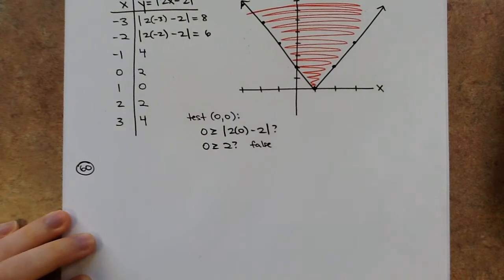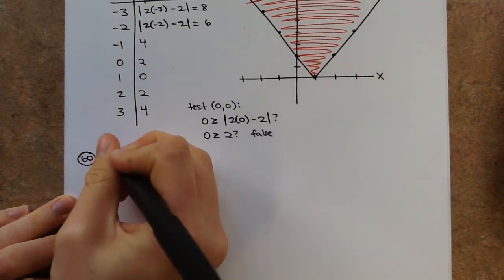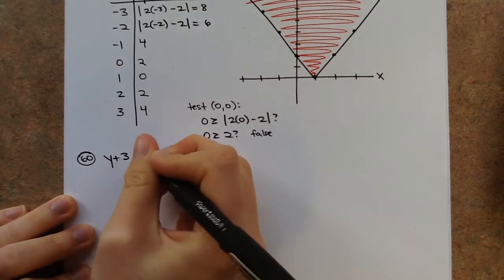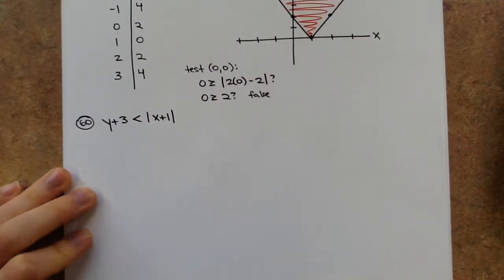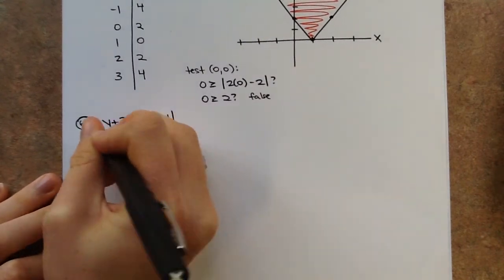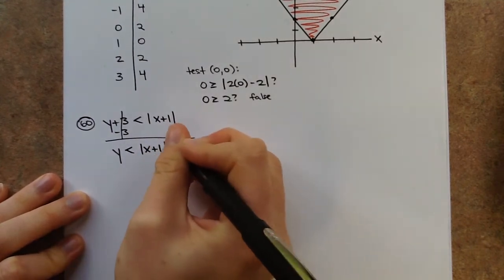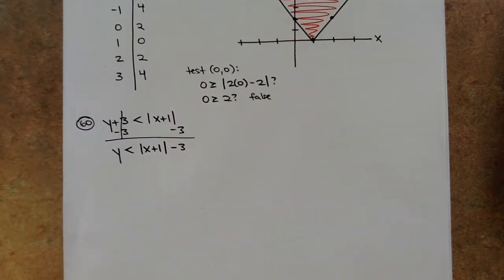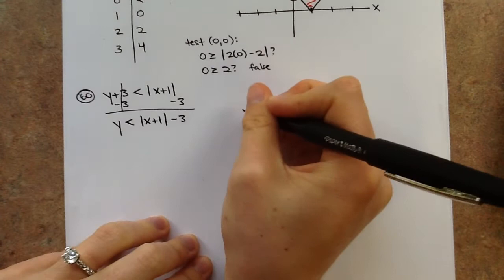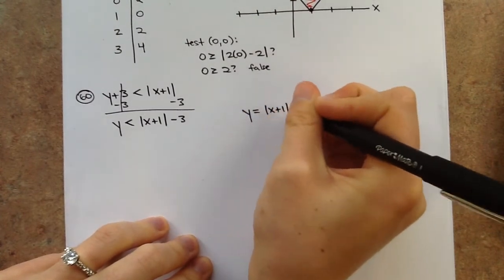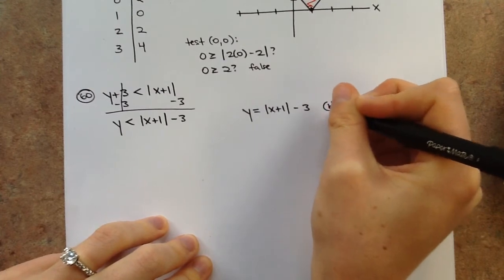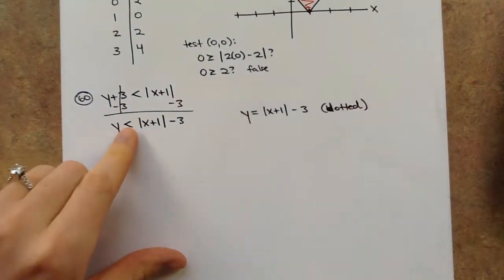Number 60: y plus 3 is less than the absolute value of x plus 1. To get y by itself, subtract 3 from both sides, giving y is less than |x plus 1| minus 3. Be careful: the negative 3 ends up outside the absolute value — it does not get absorbed inside. The boundary line is y equals |x plus 1| minus 3, and it will be a dotted line since there's no or-equal-to.